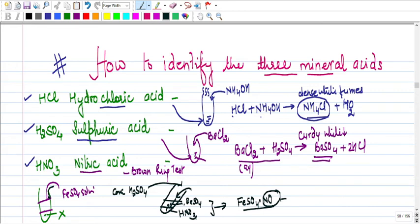So all you have to remember is these are three chemicals which are used to identify these three acids. So hydrochloric acid, the chemical is ammonium hydroxide. For sulfuric acid, the chemical is barium chloride. And for nitric acid, you have two: ferrous sulfate freshly prepared solution and concentrated sulfuric acid.